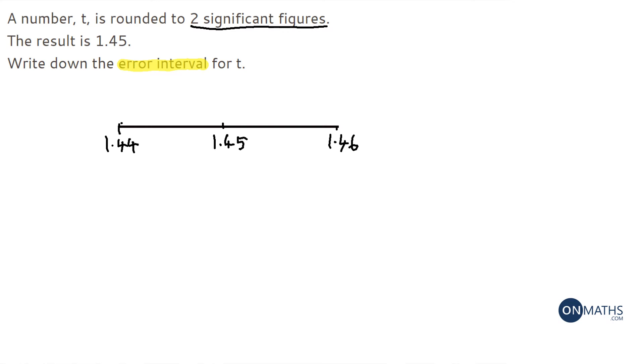So if our number was around here it would have rounded to 1.46. If it was down here it would have rounded to 1.44. So we know our number is somewhere here.